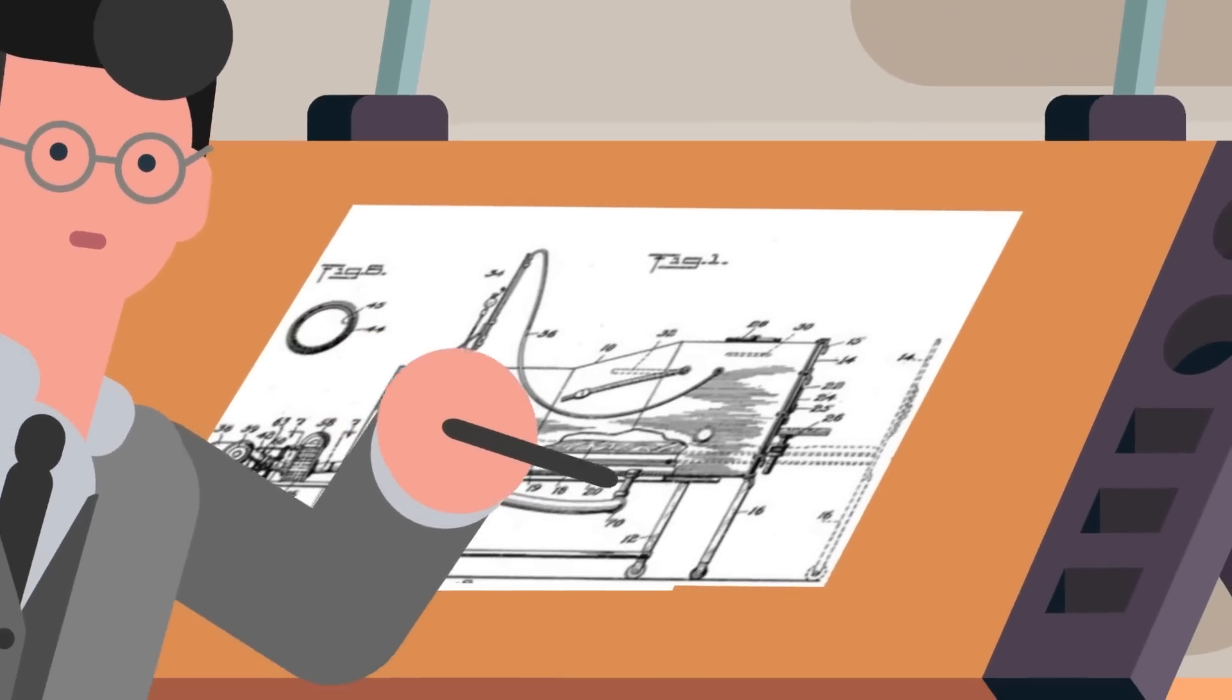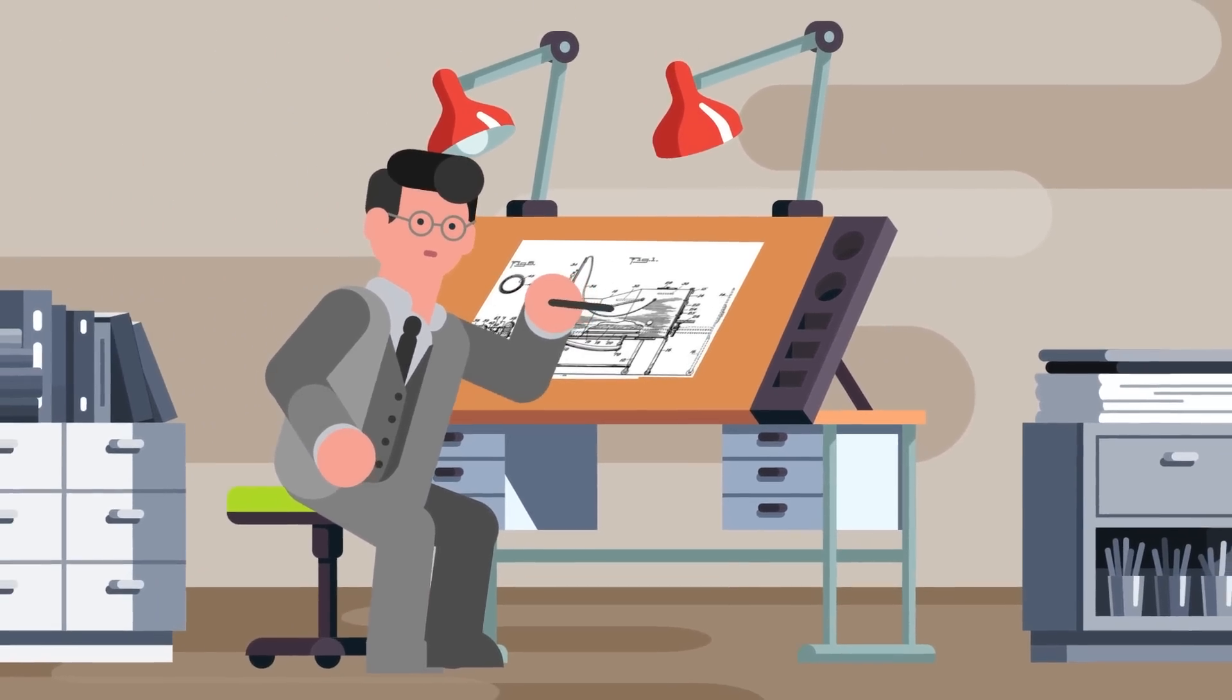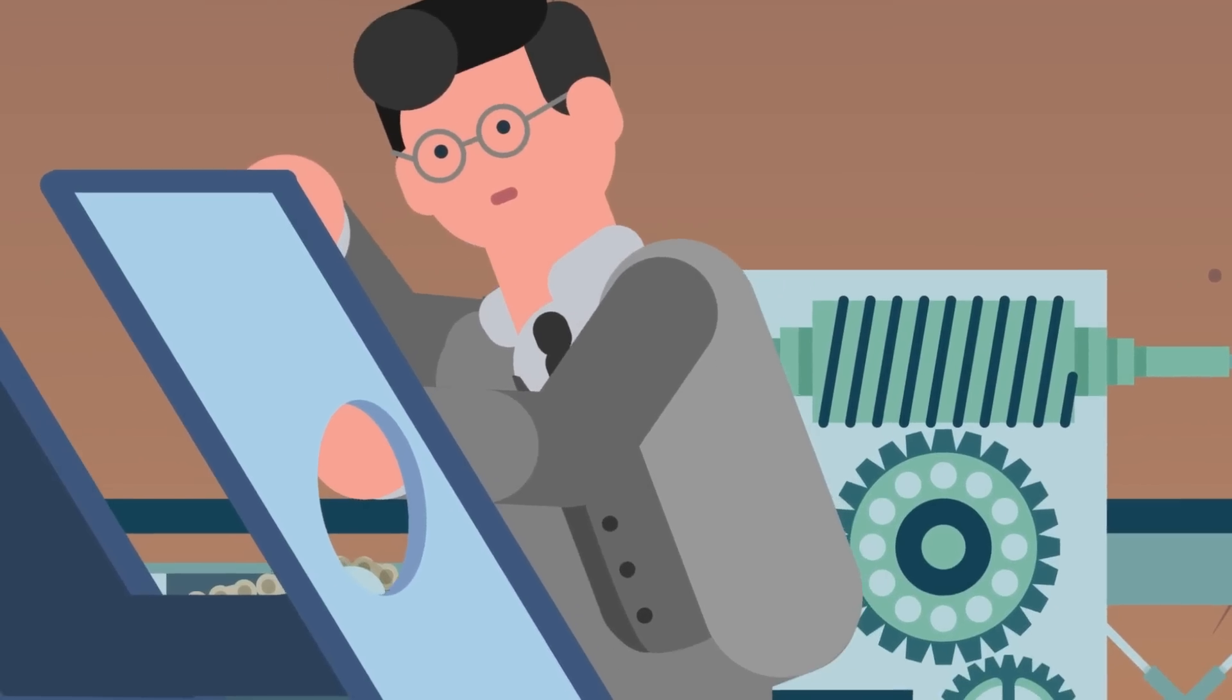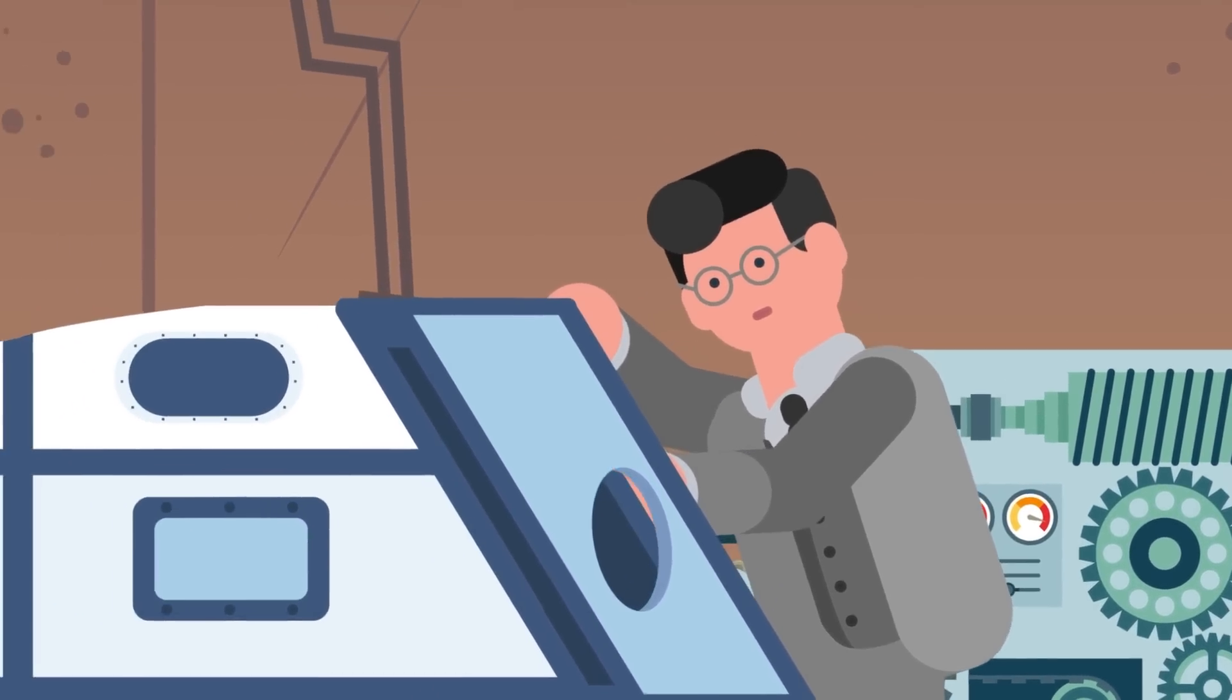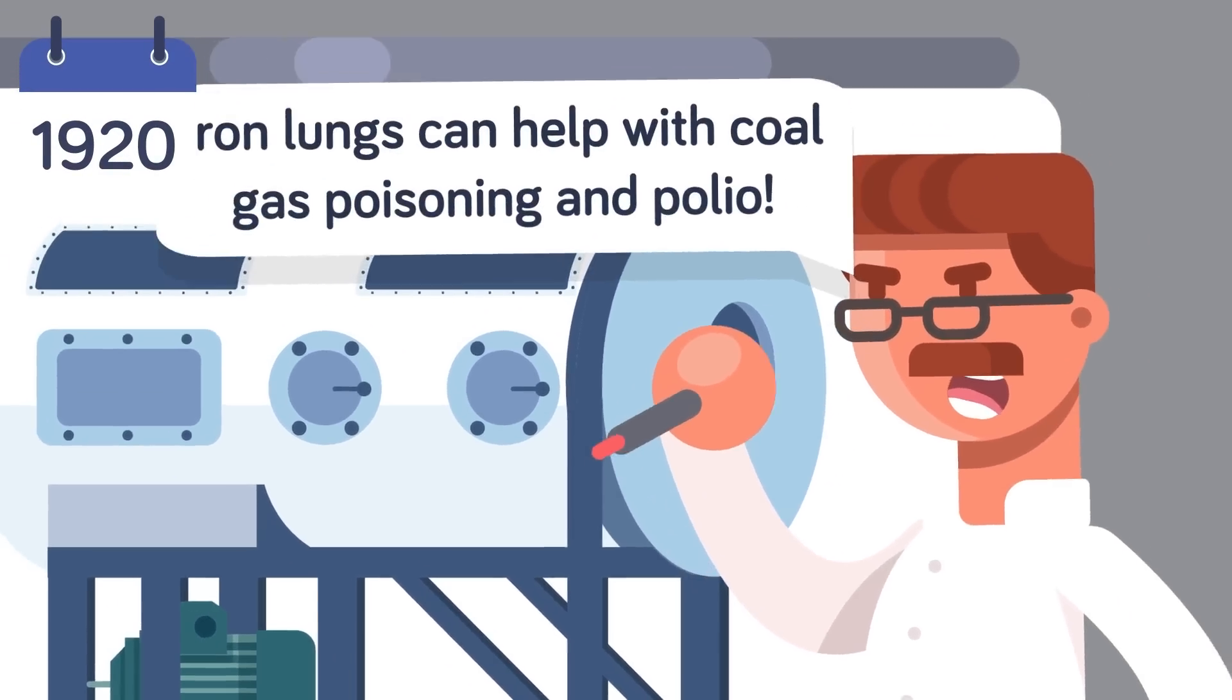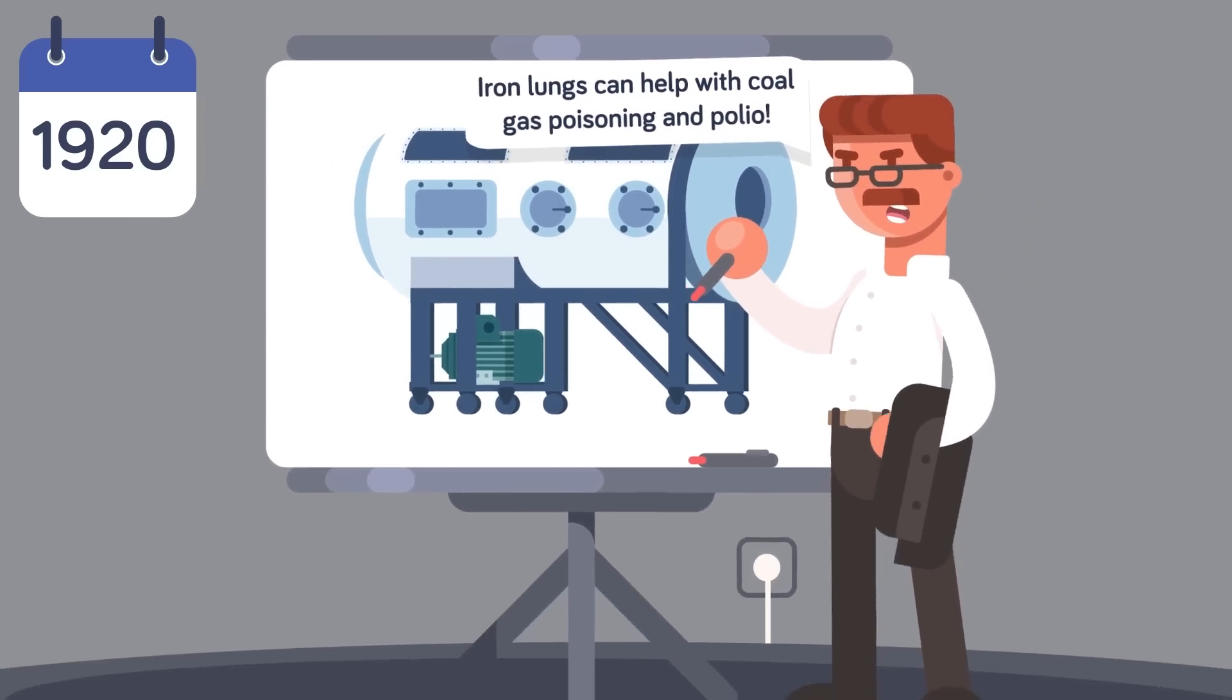Mechanical devices to assist with a person's breathing weren't a new idea at the time, but the sheer scale of the polio epidemic forced Drinker and Shaw to come up with a ventilator that could allow patients suffering from airborne illnesses to potentially survive the effects on their lungs by being able to breathe closer to how they normally would. While originally designed to treat coal gas poisoning in the late 1920s, the iron lung would soon become renowned for its use in treating the respiratory failure that could occur as a result of contracting polio.